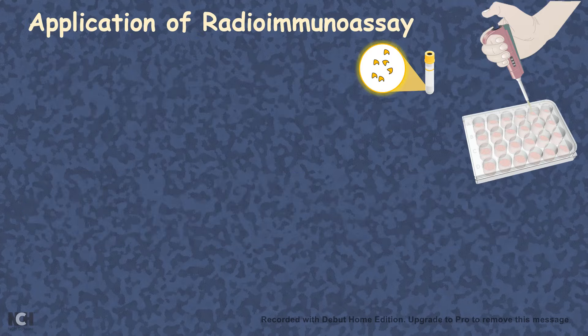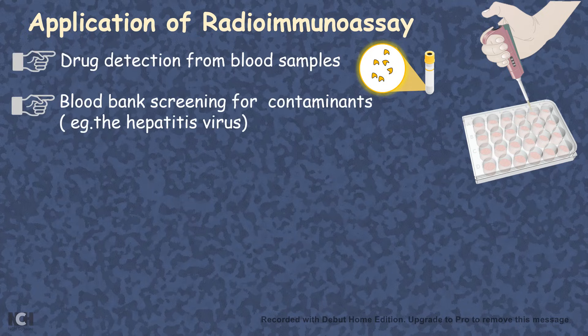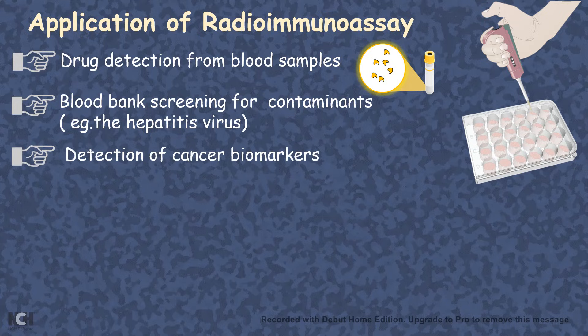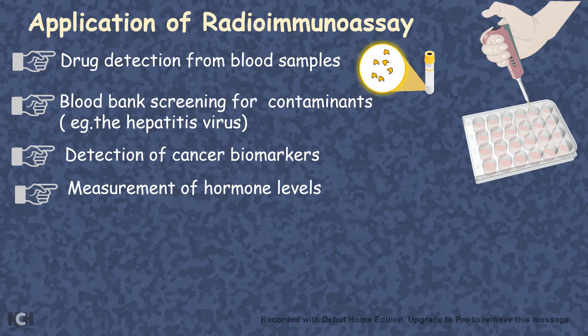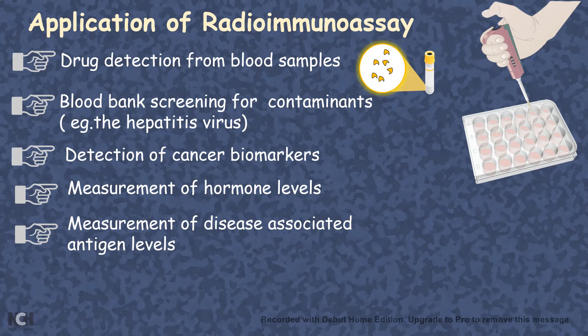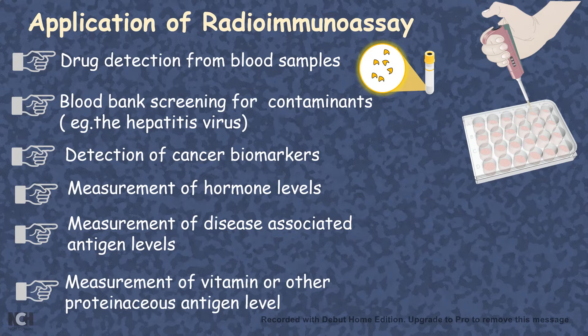The application of radioimmunoassay is broad spectrum. It can be used for drug detection from blood samples and blood bank screening for contaminants such as hepatitis B virus — it can scan for hepatitis B antigens in blood bank samples to ensure there is no contaminated blood. It can also be used to detect soluble cancer biomarkers, measure hormone levels, and measure disease-associated antigen levels.